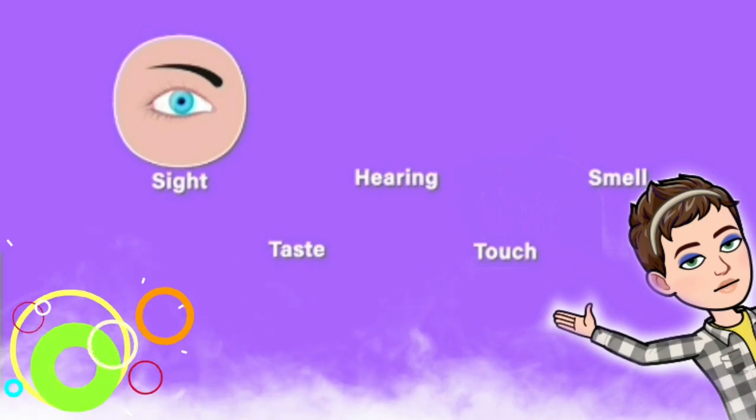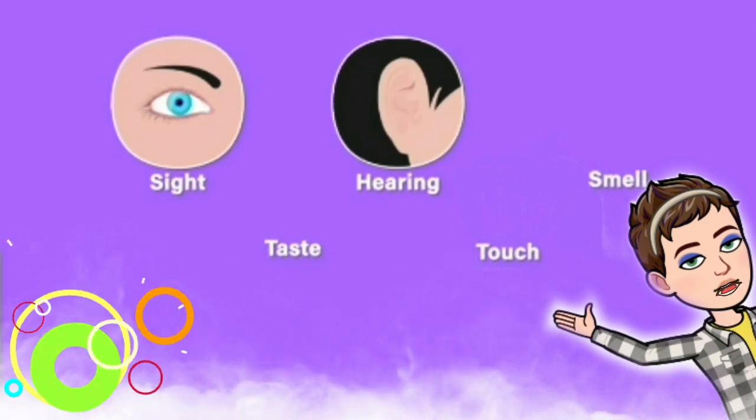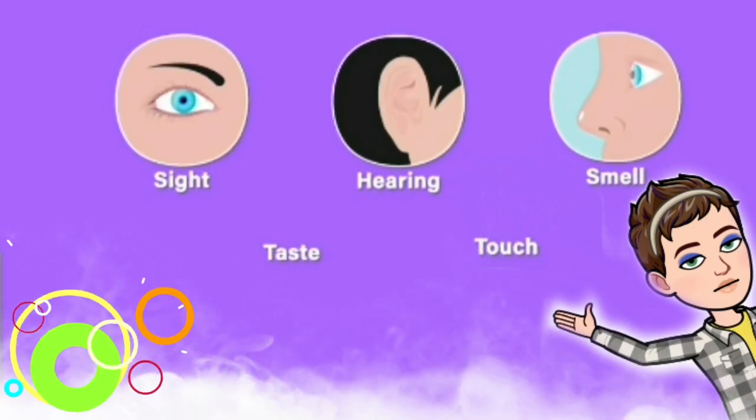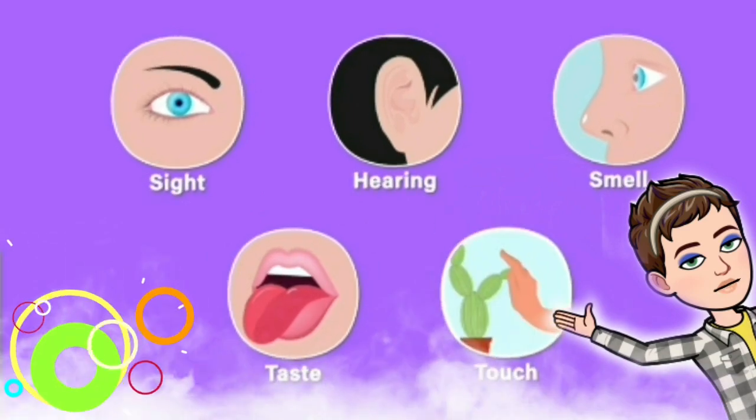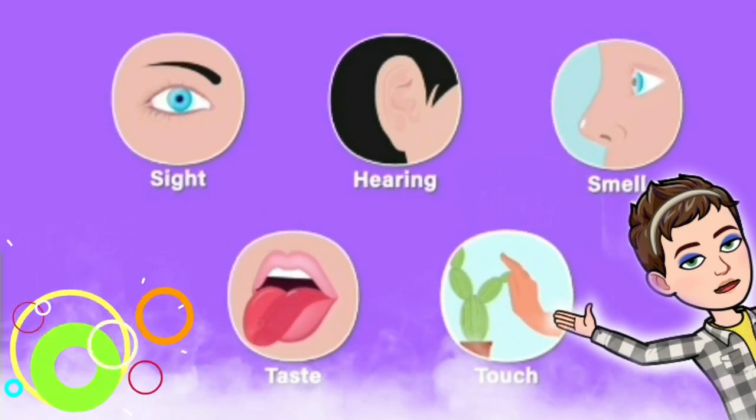Eyes help us to see things, ears help us to hear sounds. We smell with our nose, we taste with our tongue, and the sense of touch is provided by our skin.